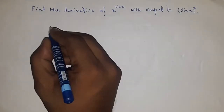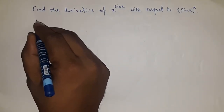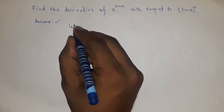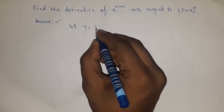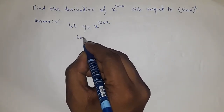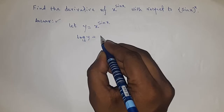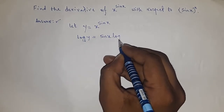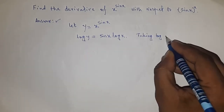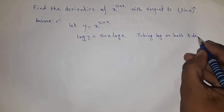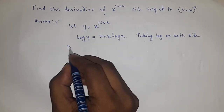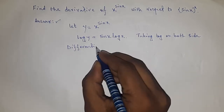First of all, let y equal x to the power sin x. Now taking log on both sides, so log y equals sine x times log x.